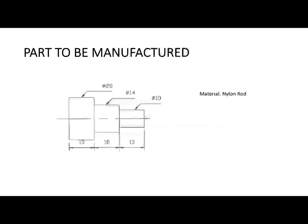For the part to be manufactured, you are provided with a cylindrical nylon rod with a diameter of 25 mm. Your objective is to reshape this workpiece into the specified shape. You will reduce its diameter to 20 mm for a distance of 30 mm, then to 14 mm for 20 mm distance, and 10 mm for 10 mm distance. You cannot go directly from 25 mm to 20 mm — you must do it in steps, for example: 25 to 23, 23 to 21, then 21 to 20, and so on.